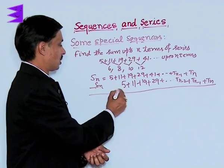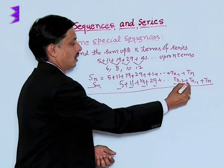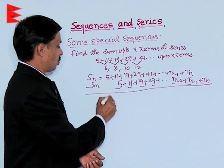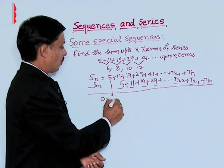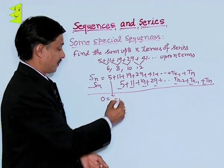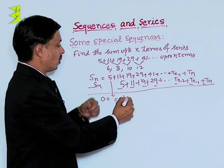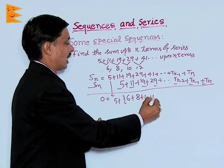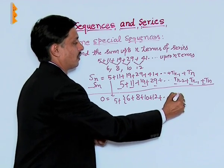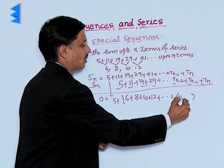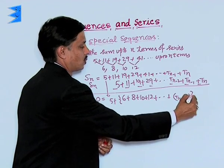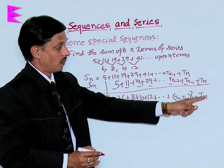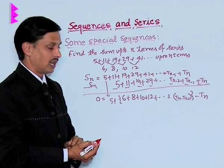And now if I ask you to subtract in this position, I will find S_n minus S_n is 0. First term 5 and now the differences: 6, 8, 10, 12, and final is T_n minus T_n minus 1, minus T_n final term which is not paired with any one.